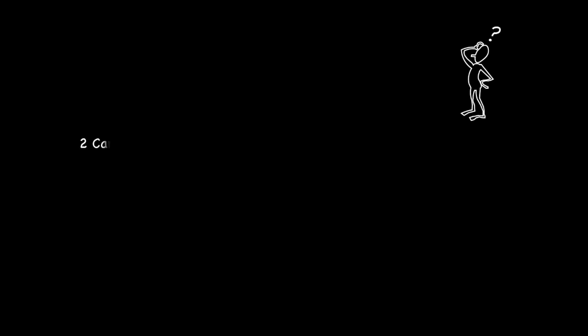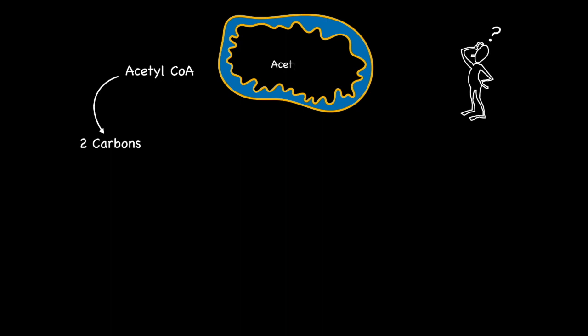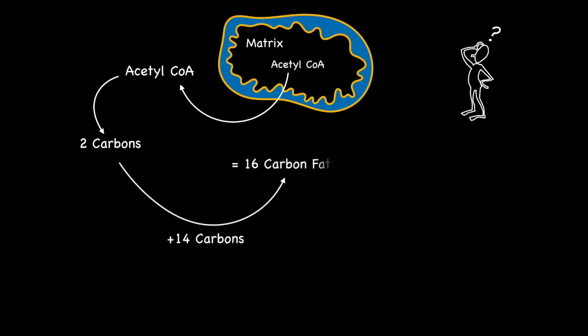Finally, some of you might be wondering why it takes seven chain elongations, as opposed to eight, to create the C16 fatty acid. The reason is that the whole process begins with a pre-existing two-carbon acetyl group derived from acetyl-CoA, which was transported from the mitochondrial matrix into the cytosol. Based on this, we only need to extend the chain by an extra 14 carbons to reach that magic number 16. Each chain elongation extends the fatty acid chain by two, and two into 14 gives seven chain elongations.